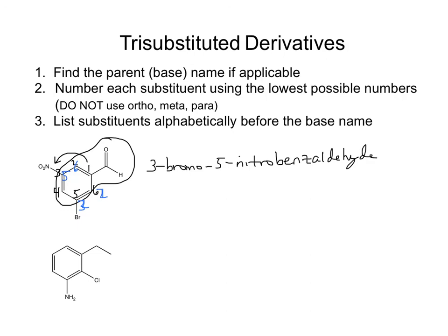Going to our next example: the parent is aniline, which gets number one. Going counterclockwise from the NH2, chlorine comes before ethyl alphabetically, so this is 2-chloro-3-ethylaniline.